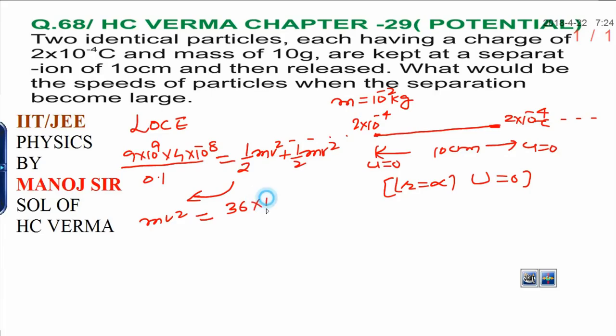36×10² when you take 1, 10, 10, 8, that is 2. And v², you can write 36×10², divided by mass is given, that is 10⁻².